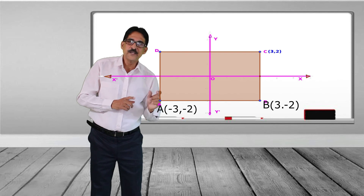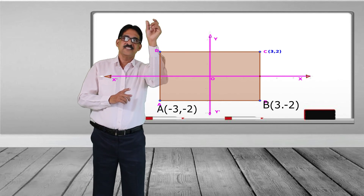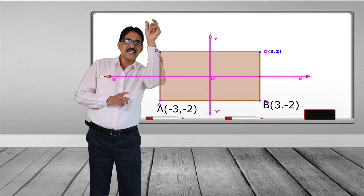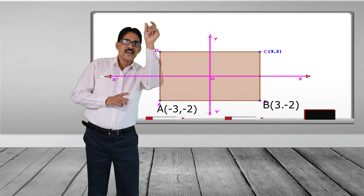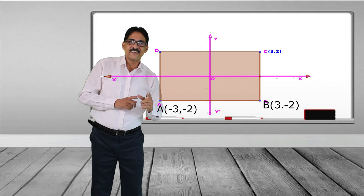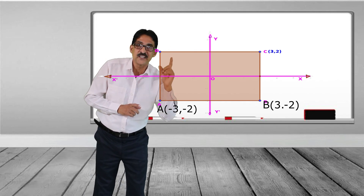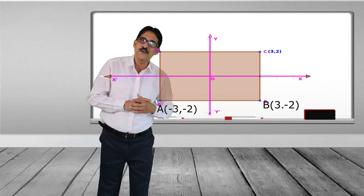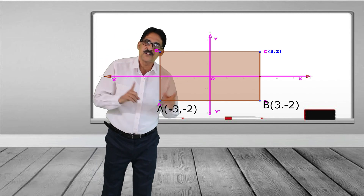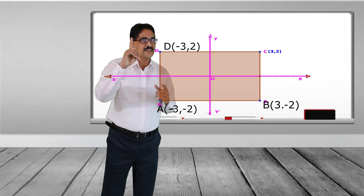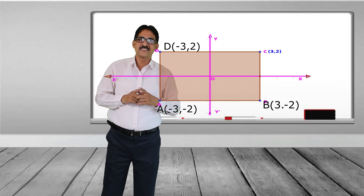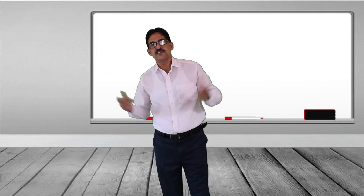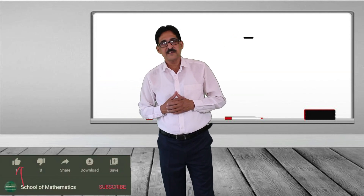Now find the coordinate of D. Since it is parallel to the y-axis, its x-coordinate is minus 3. And its y-coordinate is 2. Therefore D is (-3, 2).